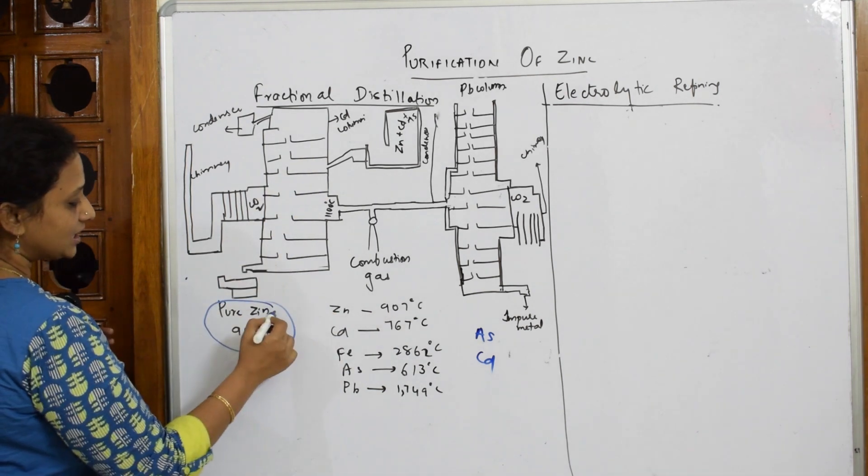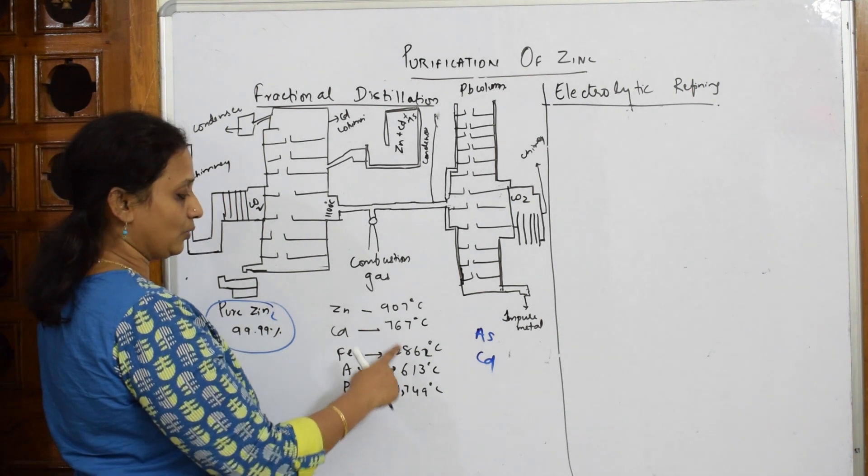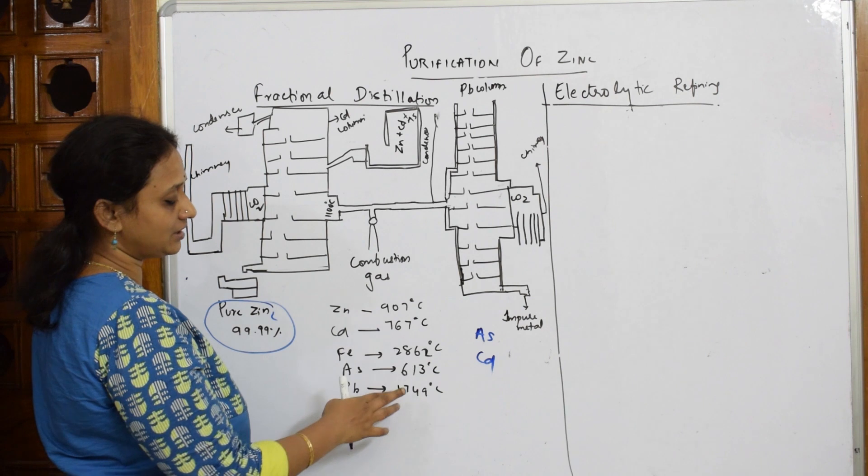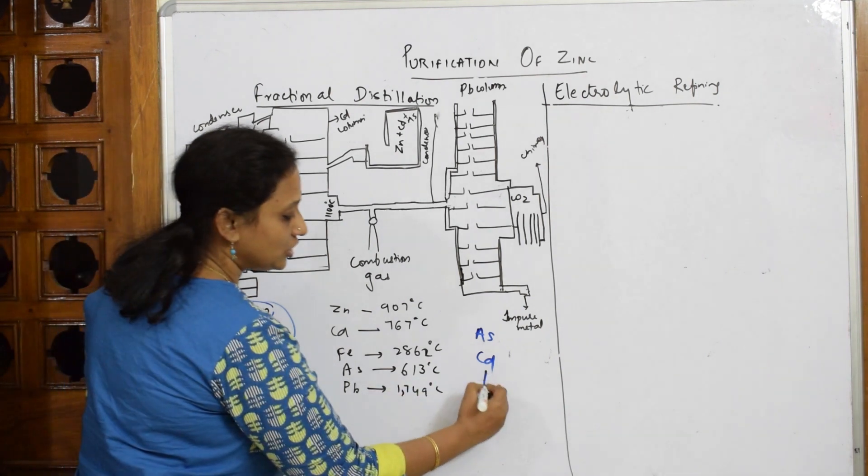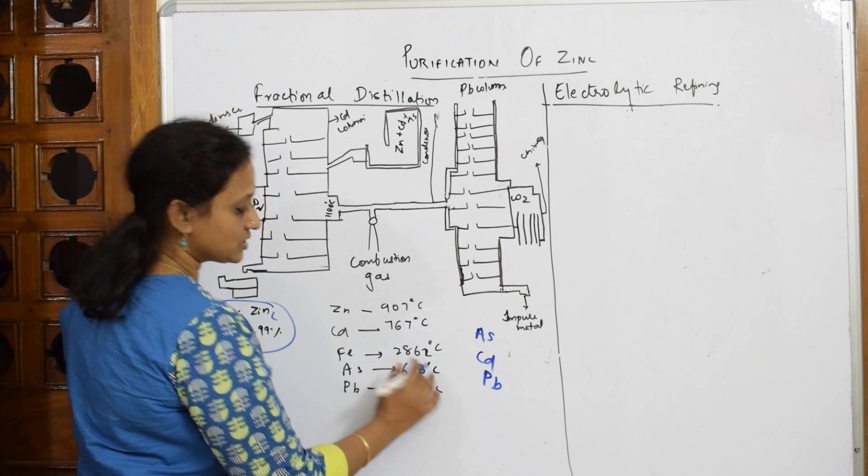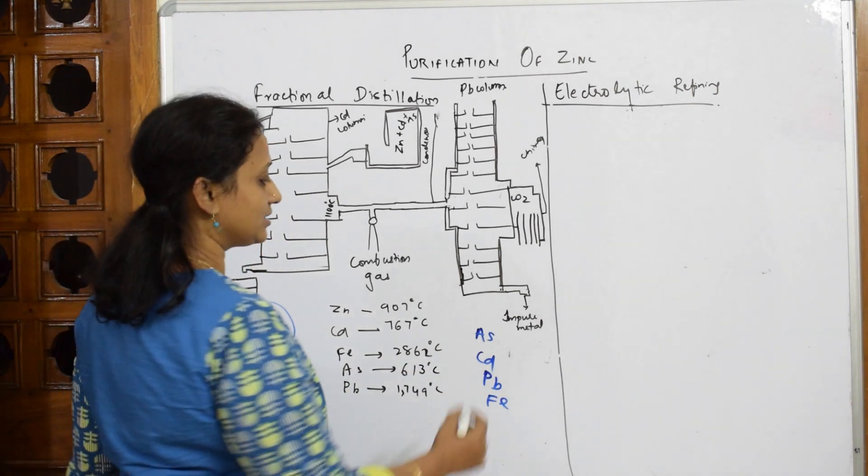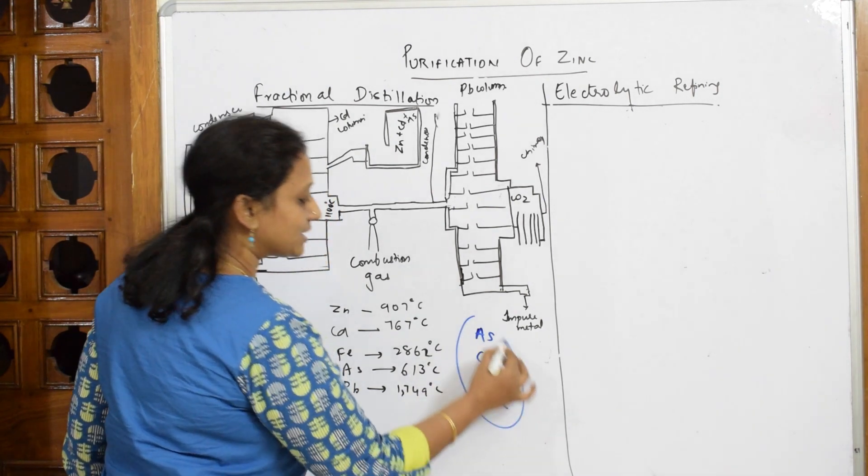When it reaches 2860°C, your iron is out. So all these impure metals are collected to one side, and your pure metal zinc is separated out.